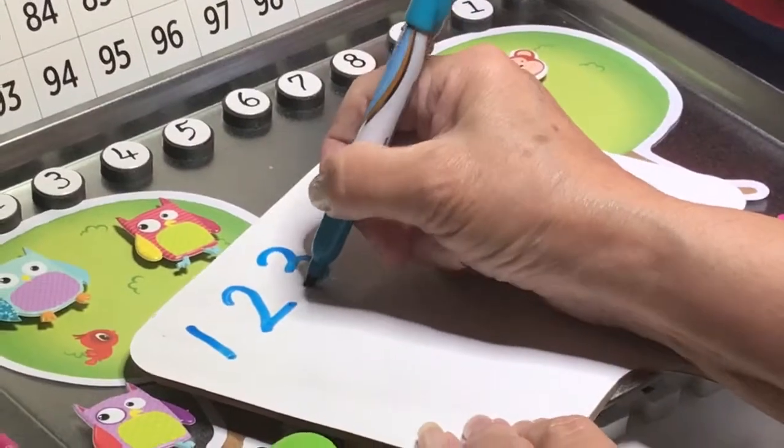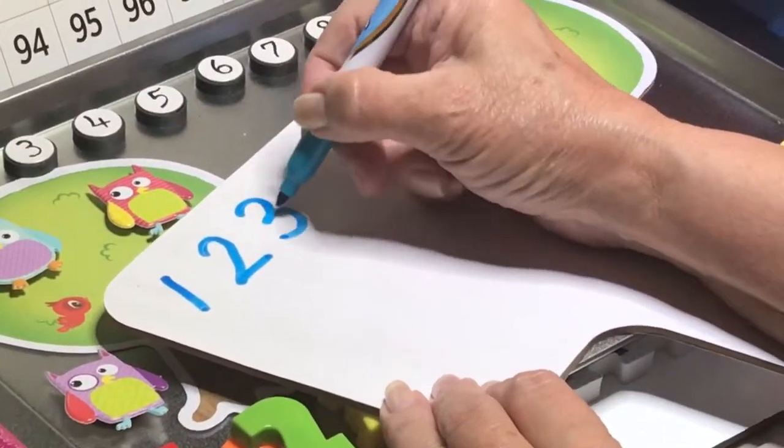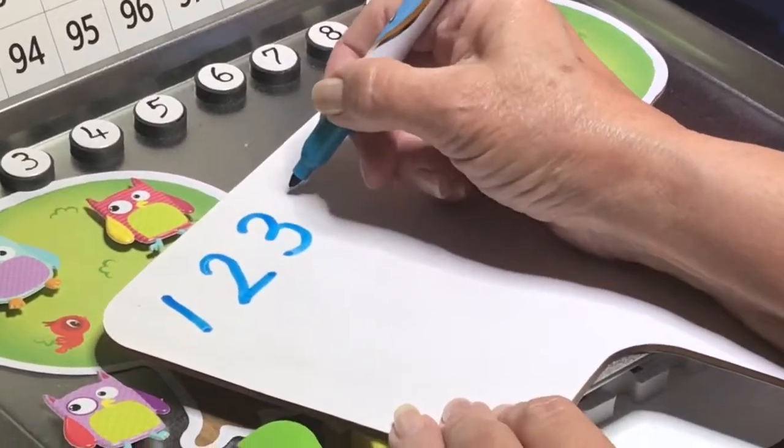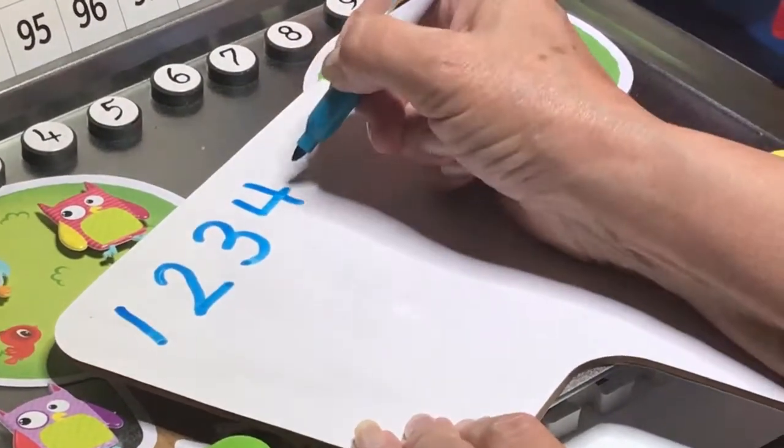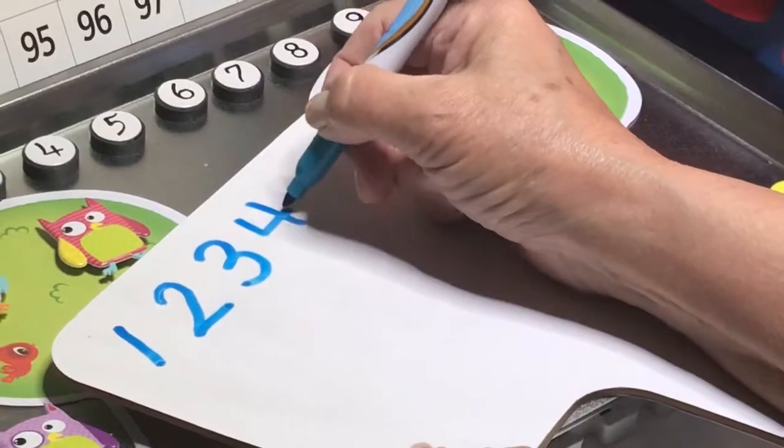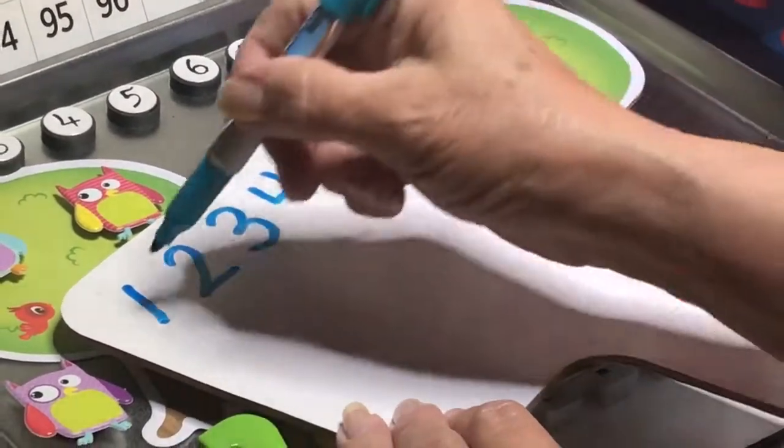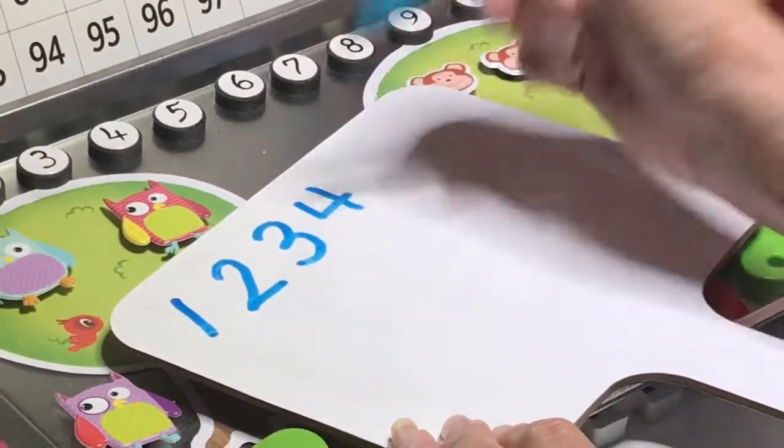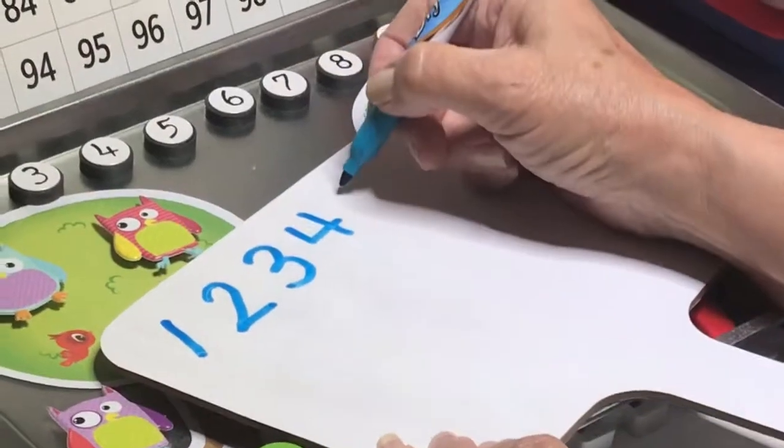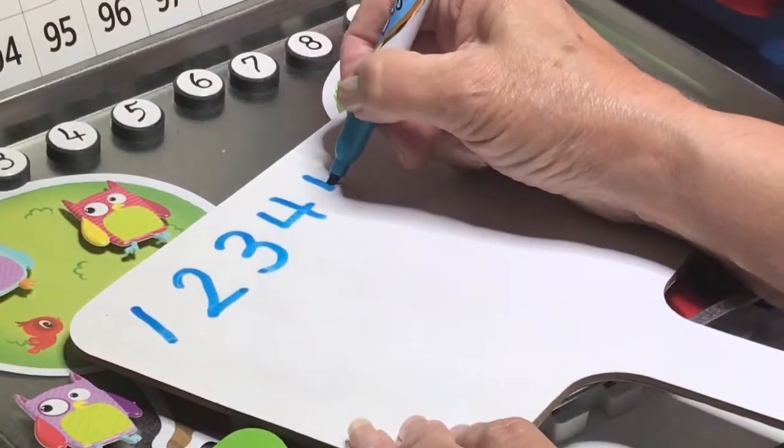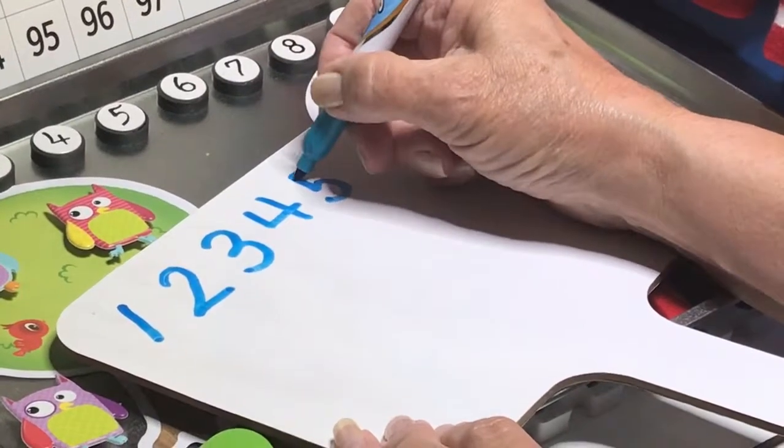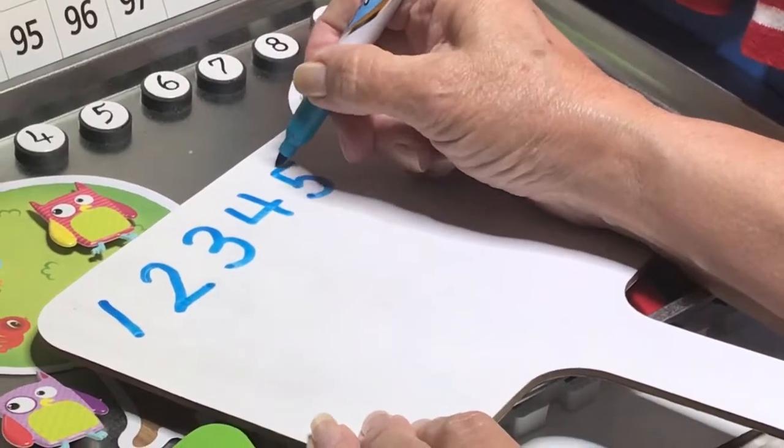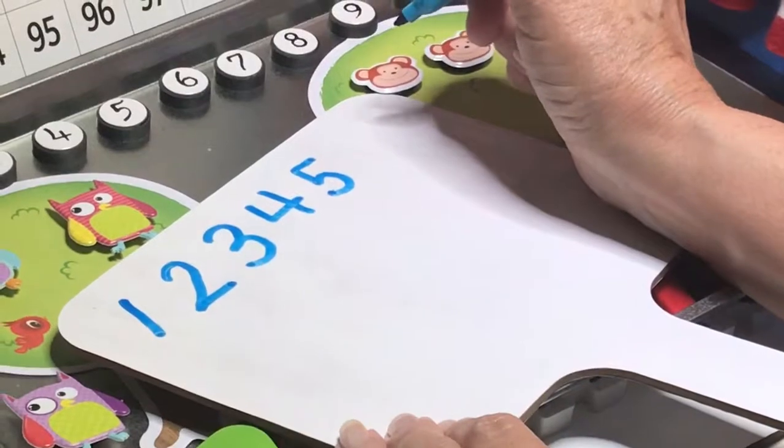Around and around to make a three. Remember that? Now, on four, short stick, long stick, then across. That's how you make a four. Now, we're going to make a five. A five is to make a straight stick back around and then a hat. That's how you make a five.